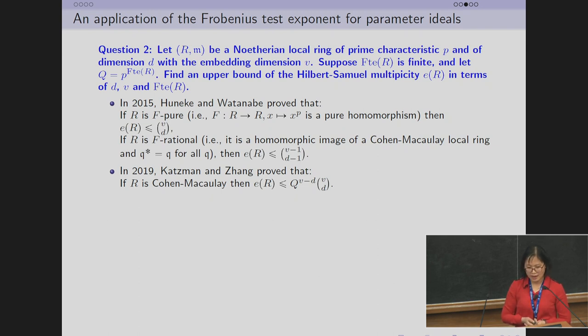In 2019, Katzman and Zhang removed the F-pure condition and used the Hassan-Spicer-Lyubeznik number to give an upper bound for multiplicity of the ring. As mentioned before, when the ring is Cohen-Macaulay, the Frobenius test exponent for parameter ideals equals the Hassan-Spicer-Lyubeznik number of the ring. The bound in this case depends on dimension d and the Frobenius test exponent for parameter ideals. When the ring is F-pure or F-rational, the Frobenius test exponent for parameter ideals equals zero.